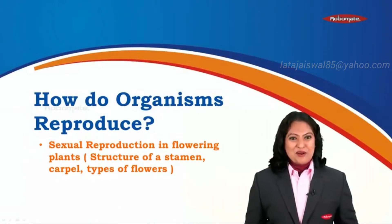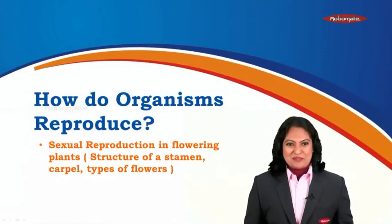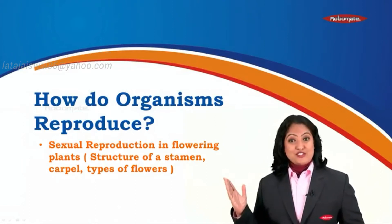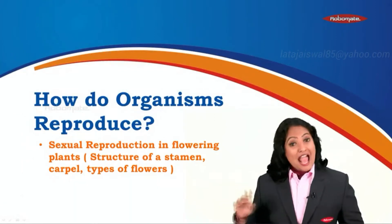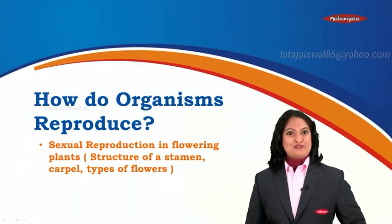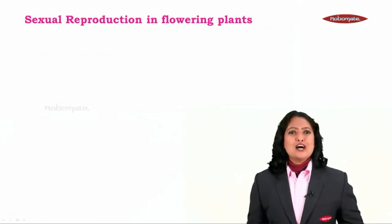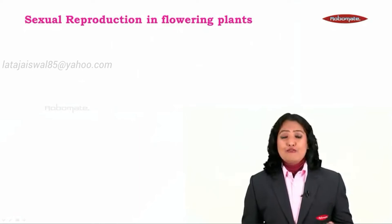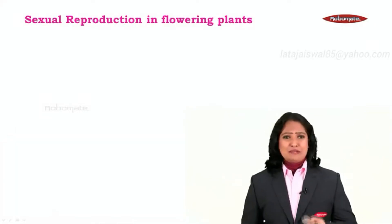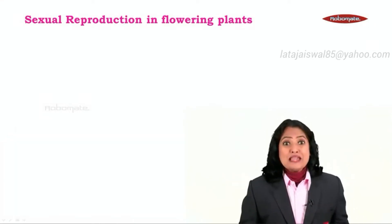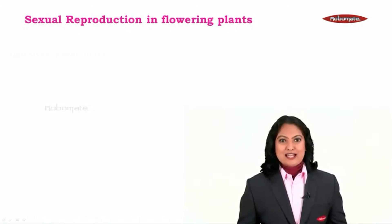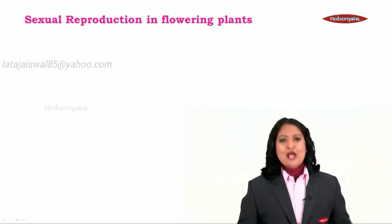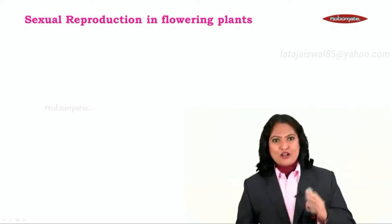Welcome students to the 11th module of this chapter. In this module we are going to talk about the structure of a stamen and a carpel, and we are going to learn the types of flowers. In the last module we established that carpel and stamen form the male and female reproductive parts of a flower, meaning these are the parts that actually participate in sexual reproduction.